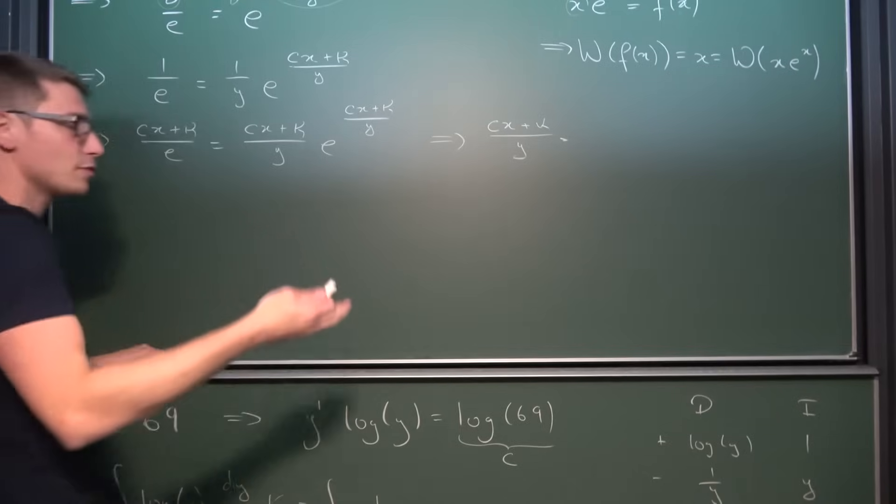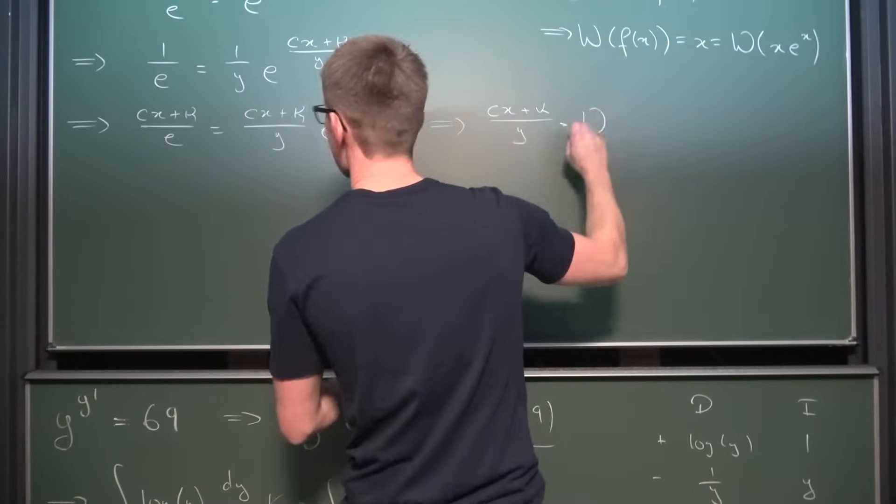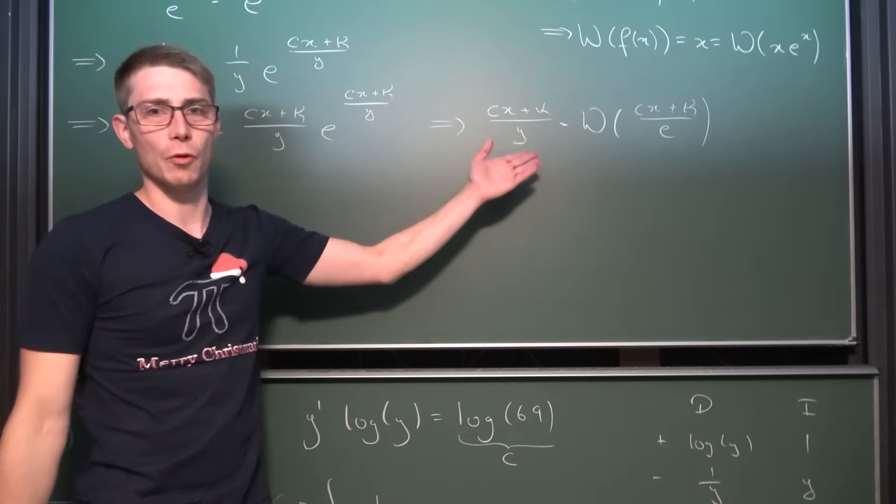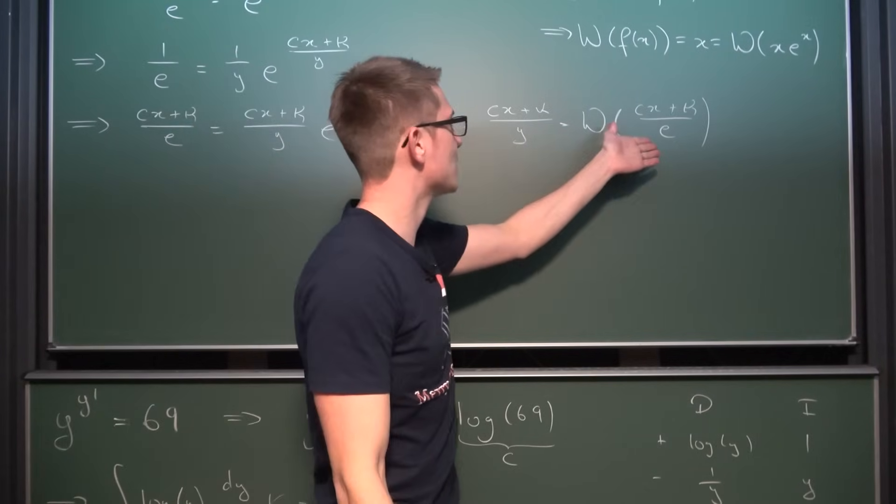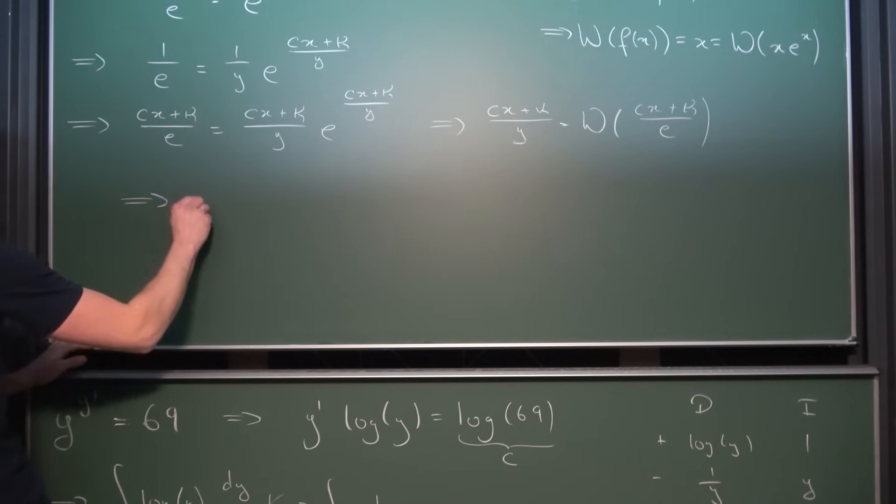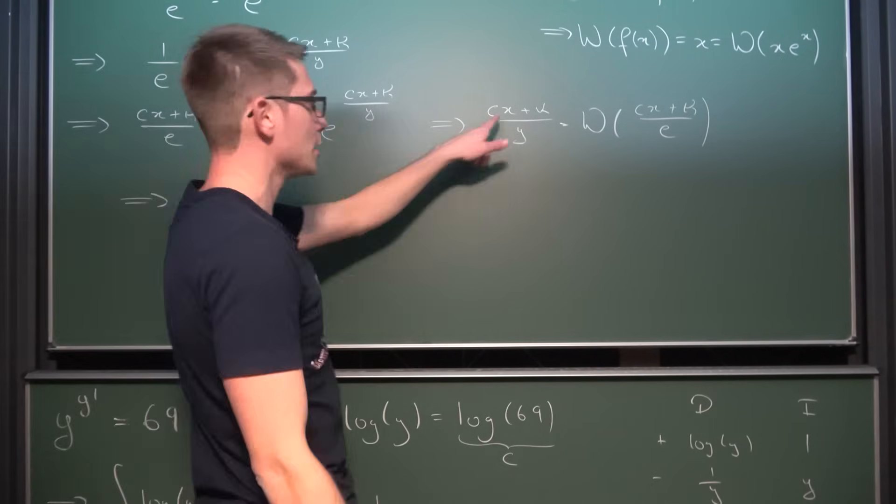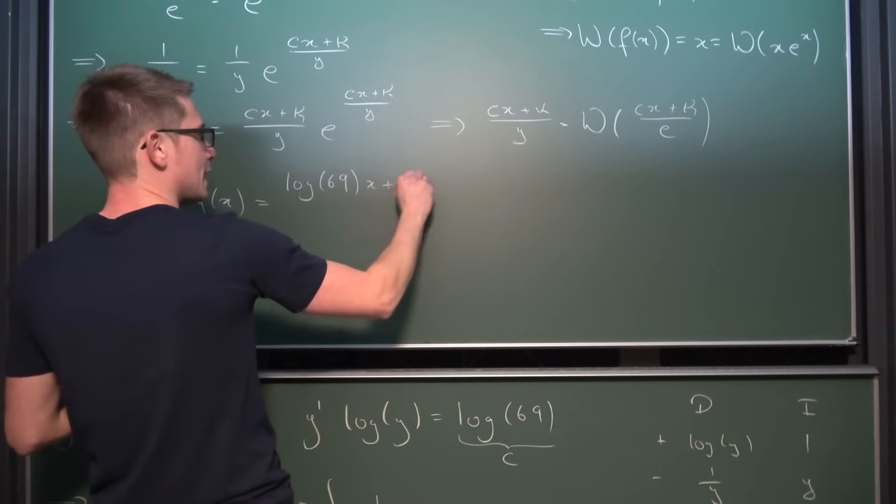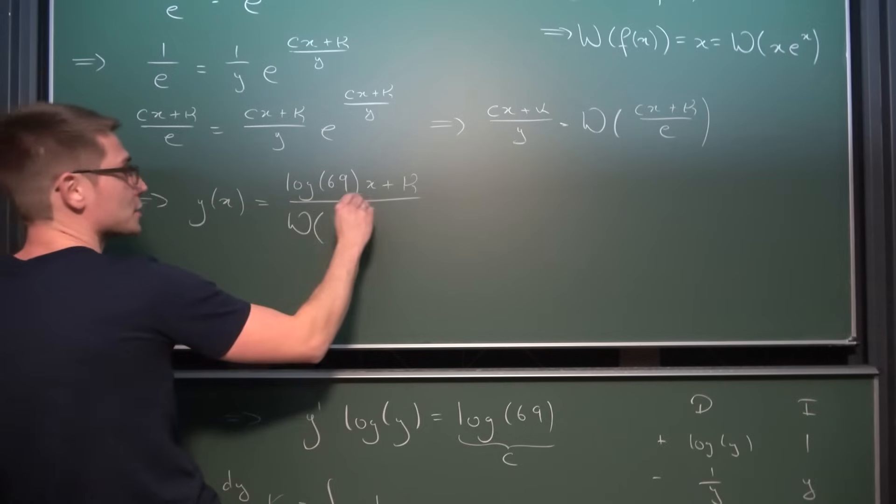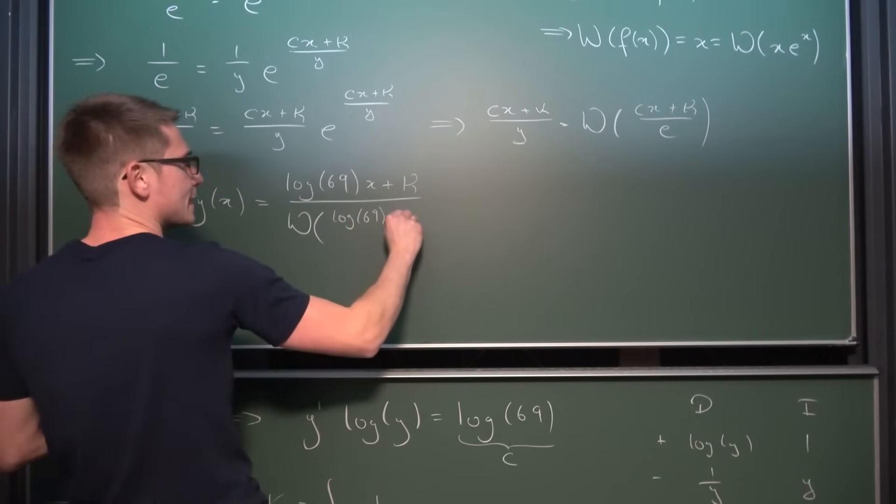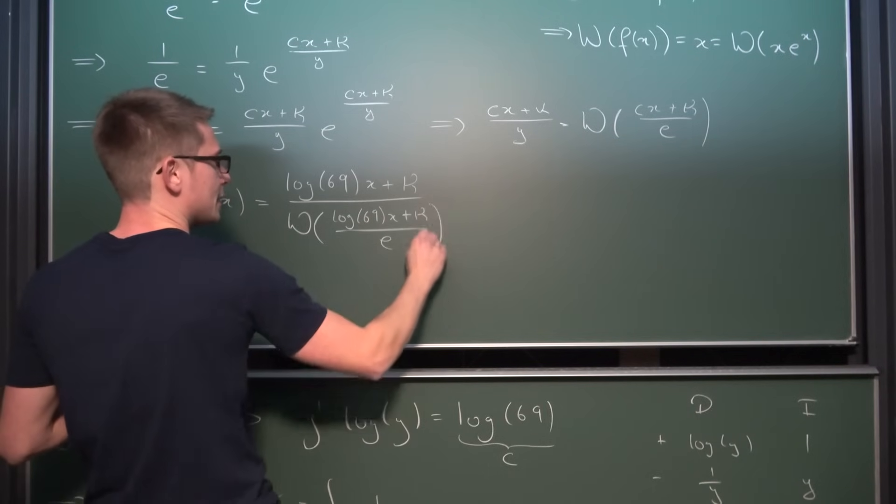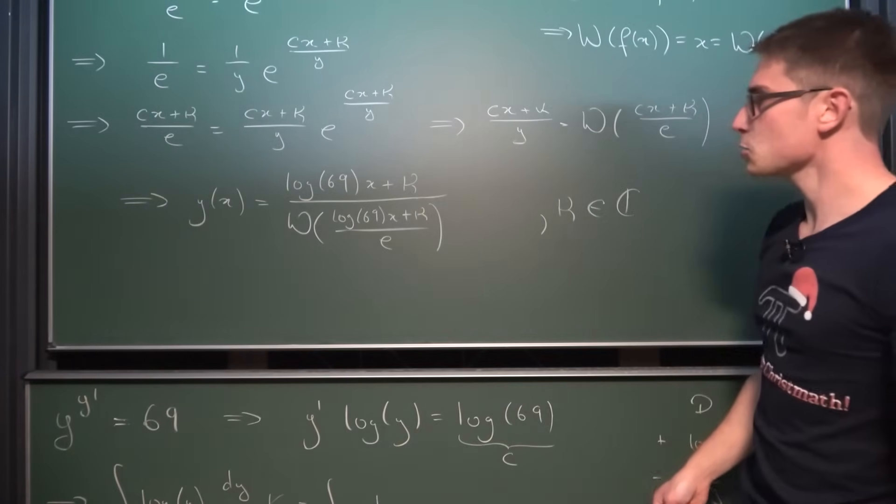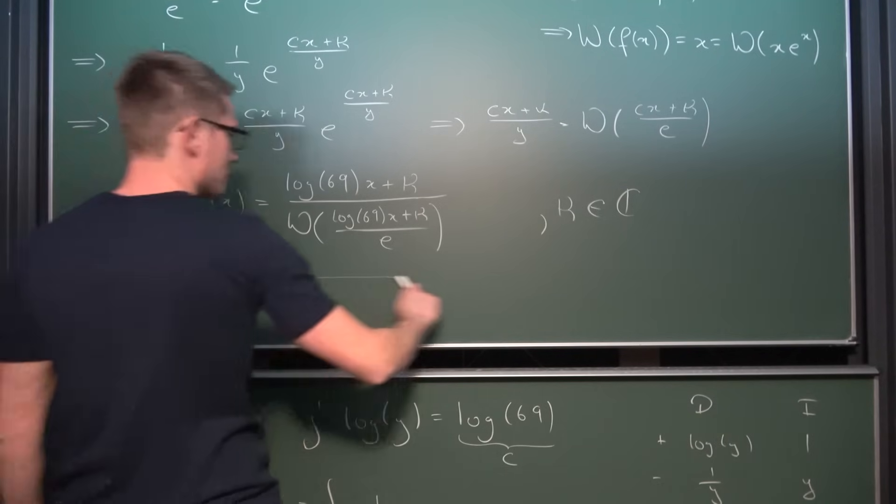We don't know what this is in terms of Lambert W function but we are going to apply it on both sides. So Lambert W of c times x plus kappa divided by e. And now we can solve for y. Multiplying both sides by y of x and dividing both sides by this holy mess. We are going to get that y with respect to x, the solution to our differential equation is equal to, don't forget c was log of 69. So we are going to write this holy number out times x plus kappa divided by the Lambert W function of log of 69 times x plus kappa divided by e where kappa is element of the complex numbers probably I suppose. And this right here is our seriously ugly solution to this differential equation.